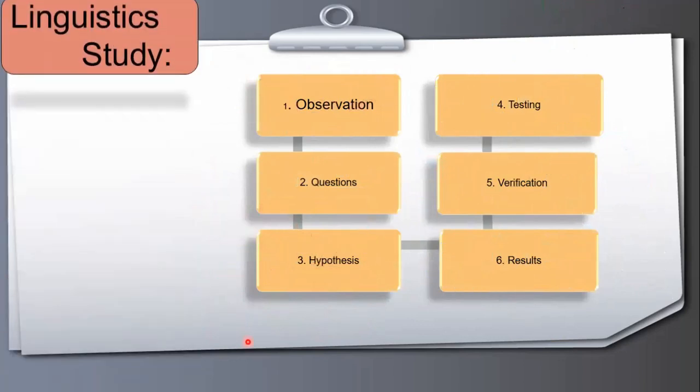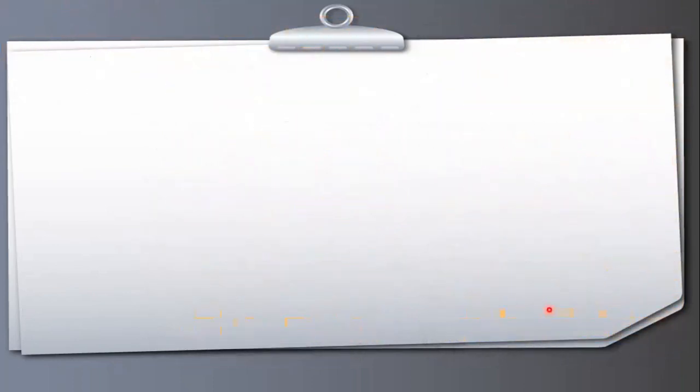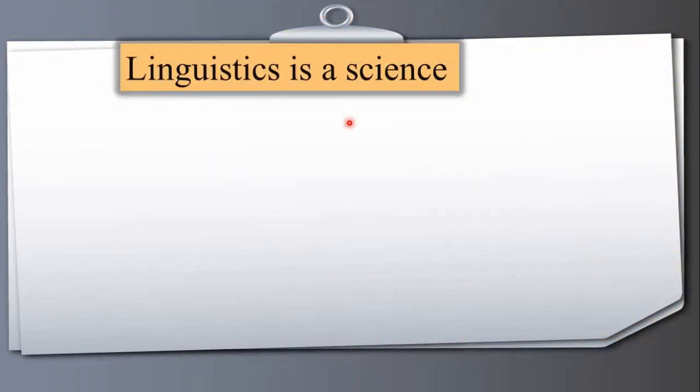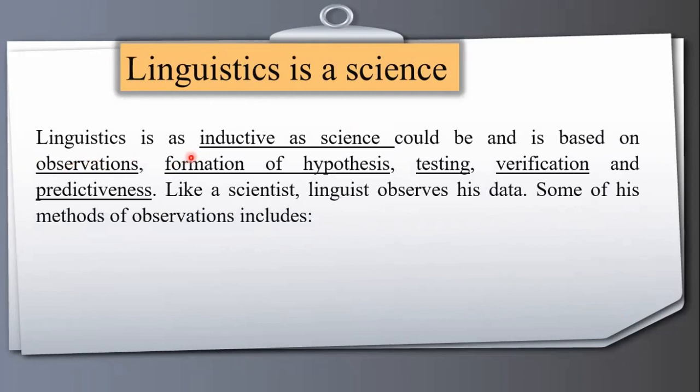When we are talking about linguistics or linguistics study, we have the same systematic study and same steps when conducting a linguistics study. For example: number one observation, questions, hypotheses, testing, verification, and at the end results. Linguistics is a science. Linguistics is as inductive as science could be and is based on observations, formation of hypothesis, testing, verification and predictiveness.